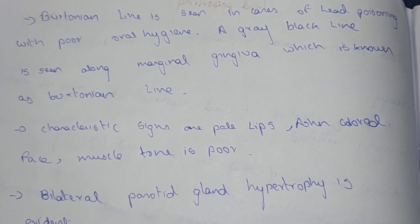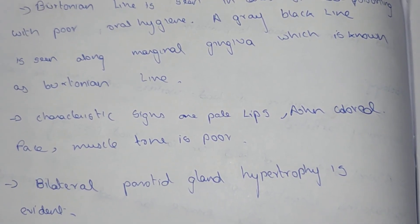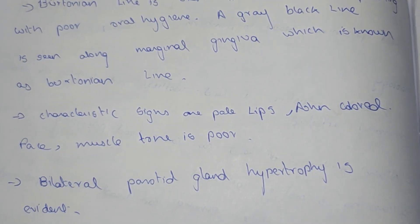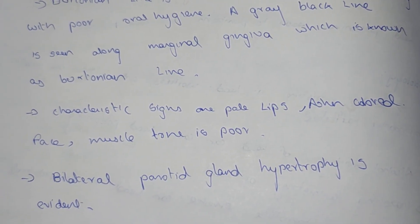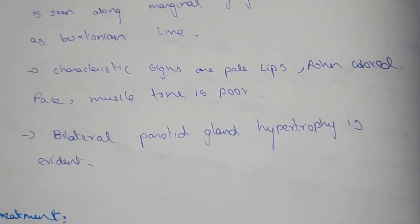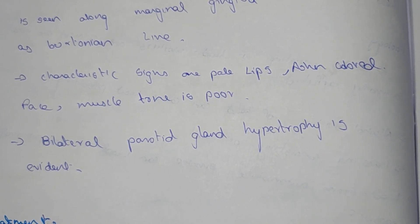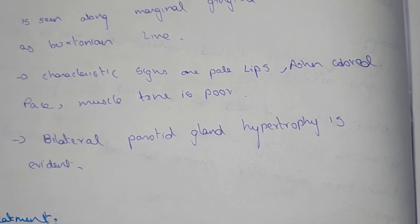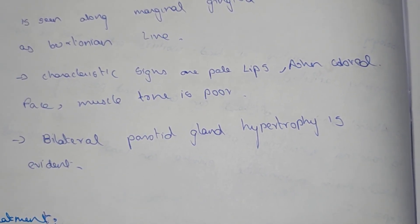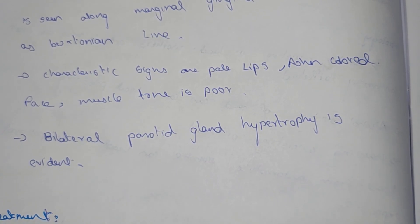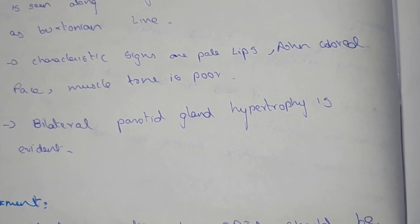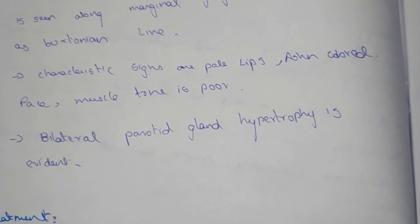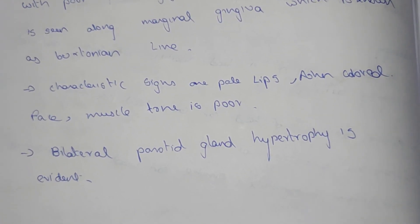A gray-black line is seen in the marginal gingiva, which is known as the Burton's line. Additional signs include ashen-colored pale lips and pale skin.